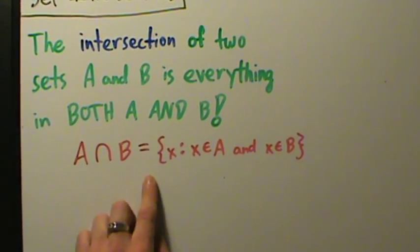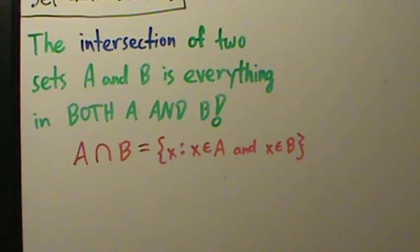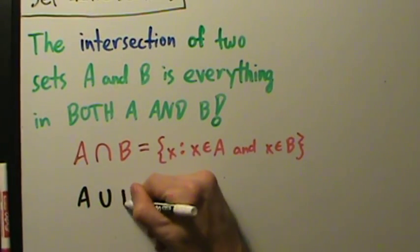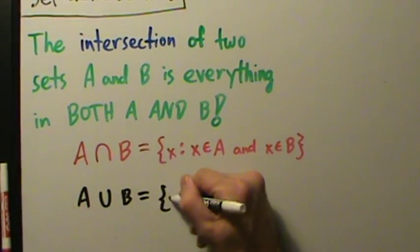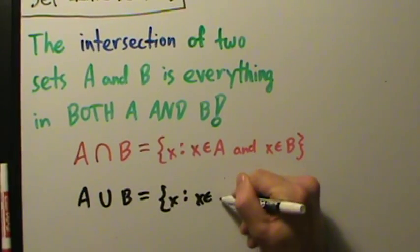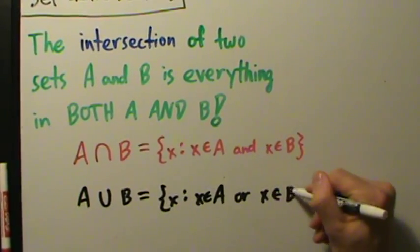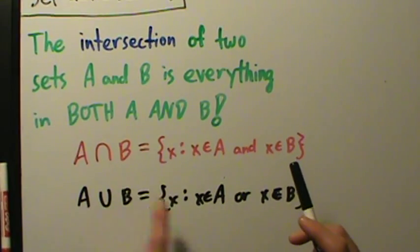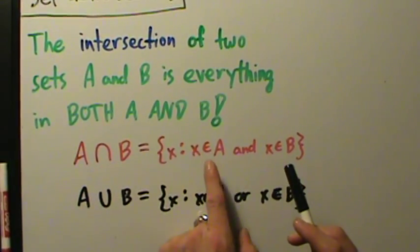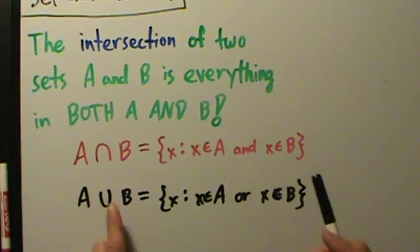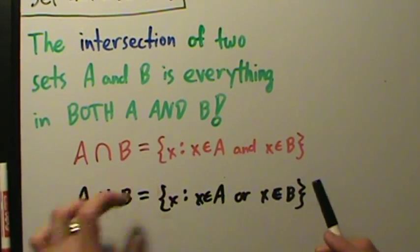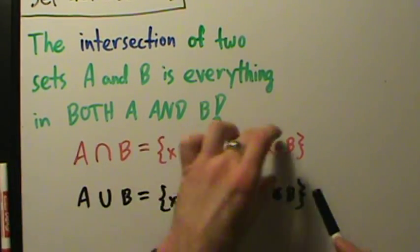So A intersect B — how does that compare to unions? A union B is the set of all X such that X is in A or X is in B, or both — the "both" is implied. The only difference really is the "and" versus "or." The intersection is everything that's in A and B. The union is everything that's in A or B. The intersection is just everything that's in both.